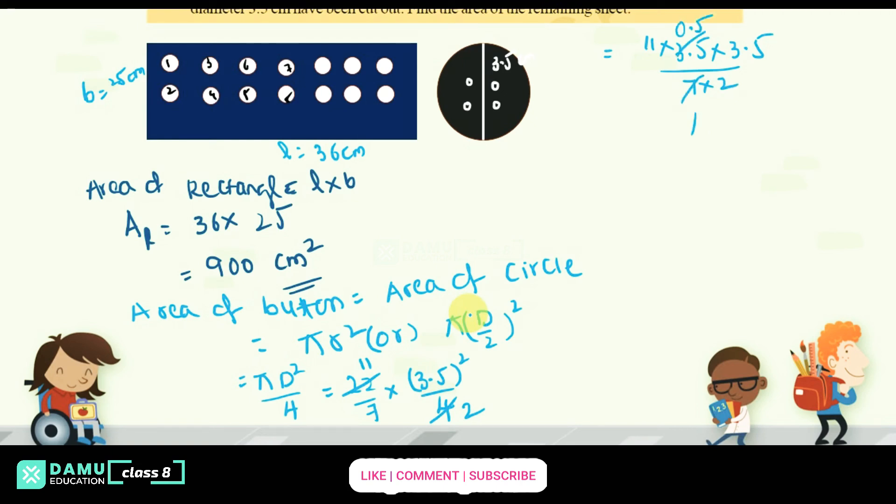Like that we will get. So 11 into 0.5 into 3.5 by 2. Then what you will get, 11 into 0.5, 11 into 0.5, into that is 5.5 into 3.5 by 2.